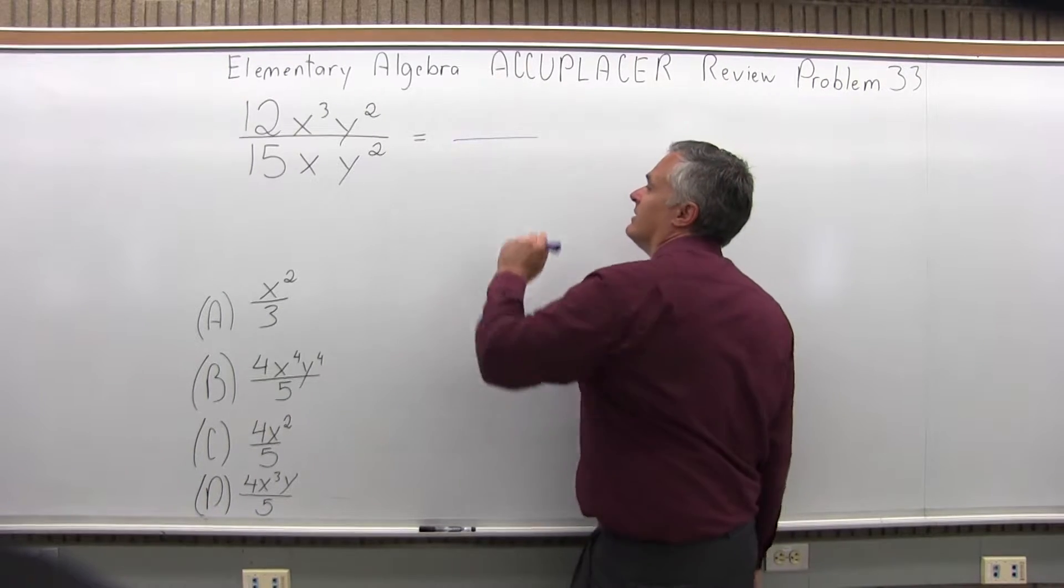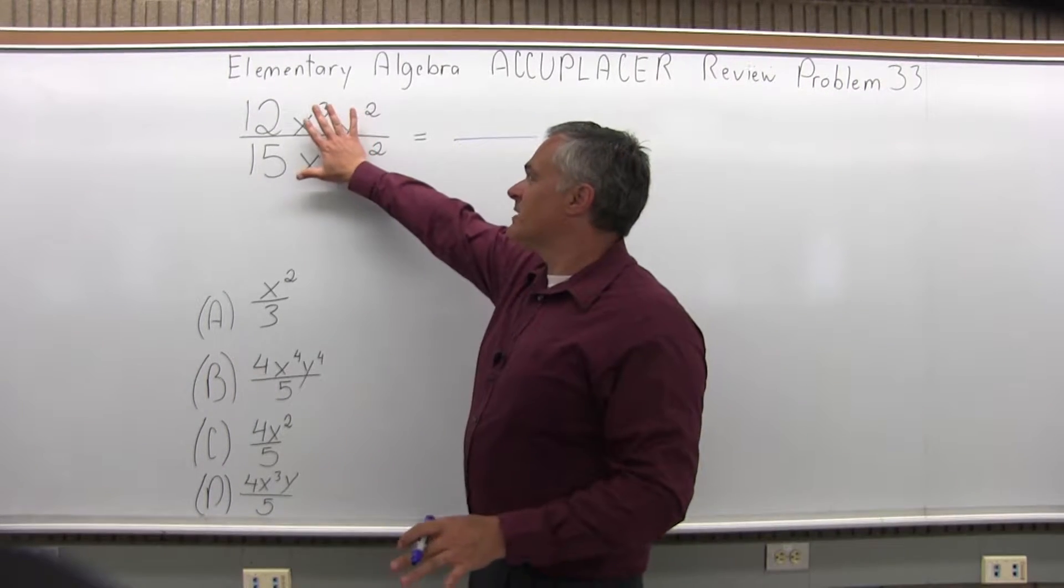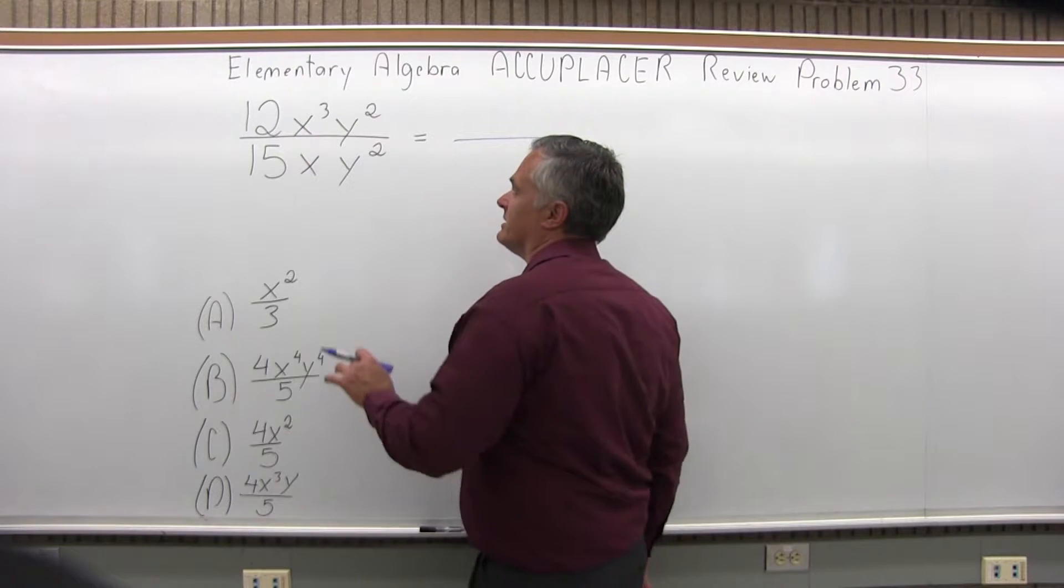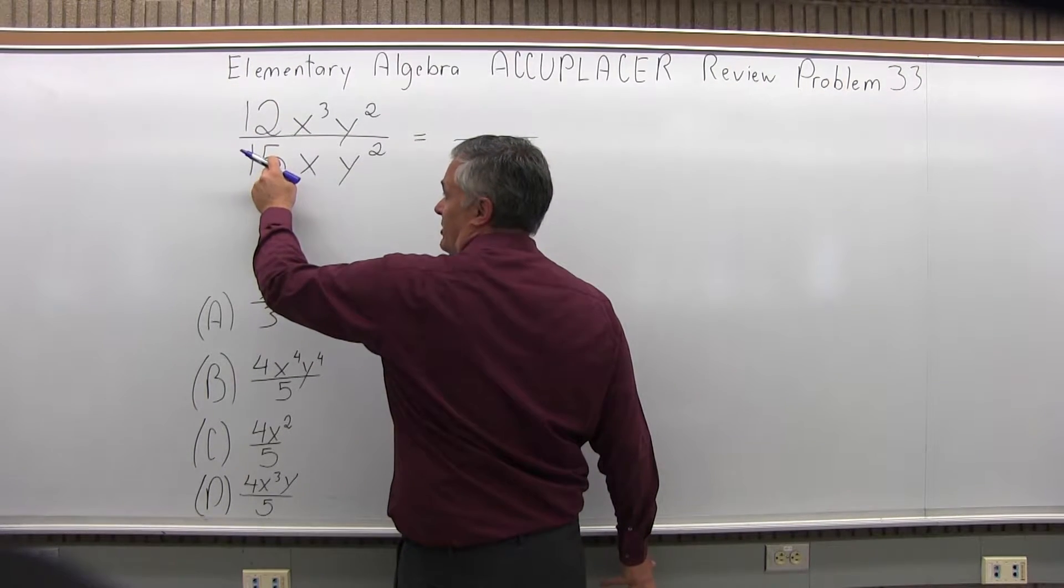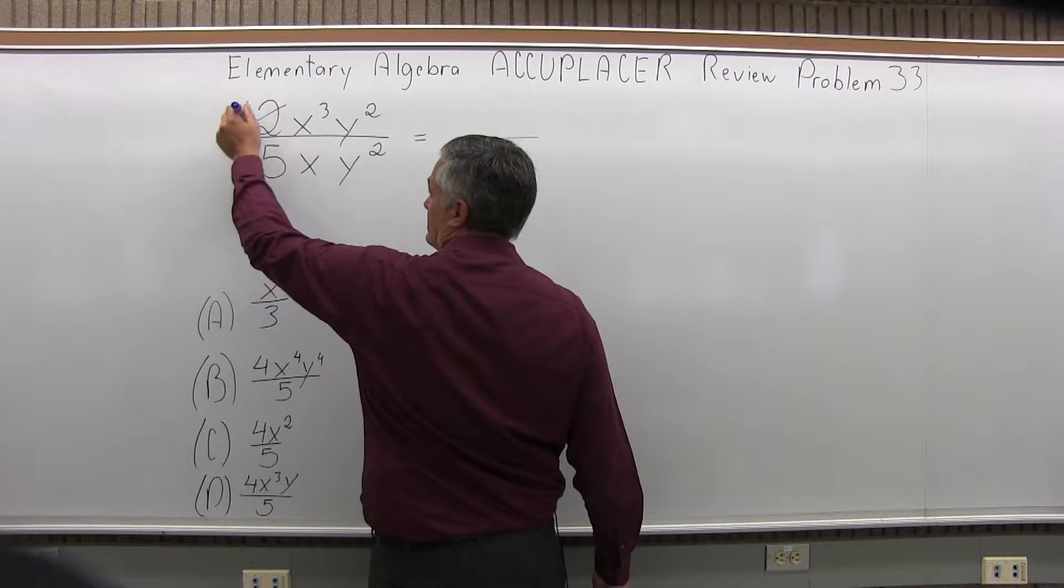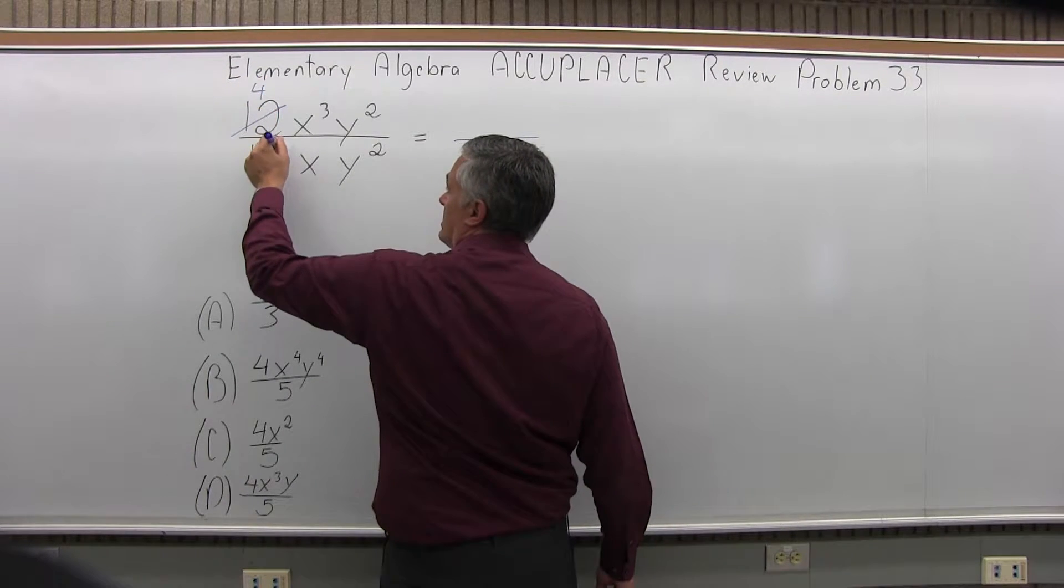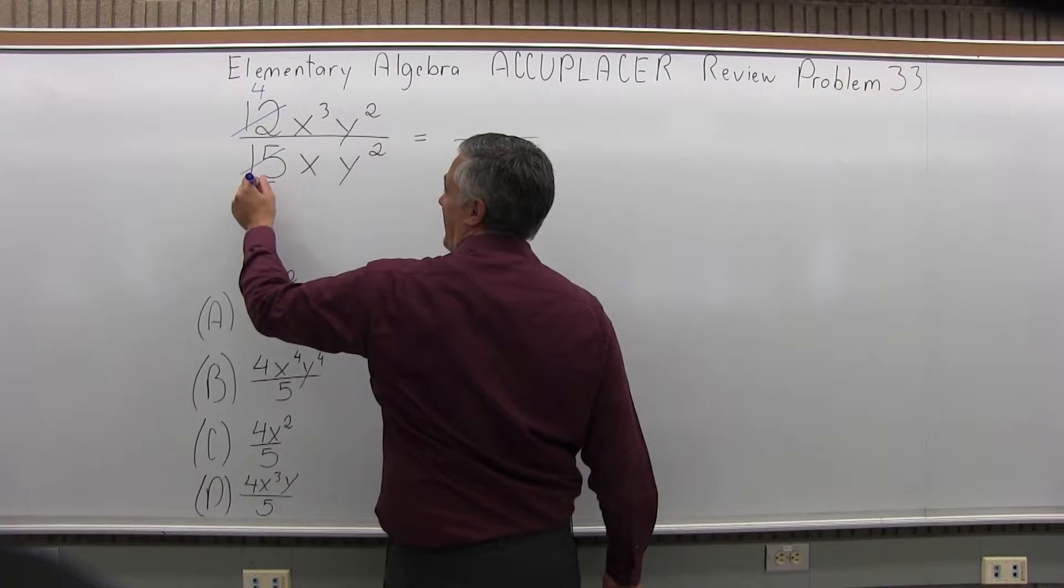So as I start that, first just the numbers, forget the variables just for a few seconds. The 12 and the 15 do reduce, 3 divides into both of them evenly. So 3 goes into 12 four times, 3 goes into 15 five times.